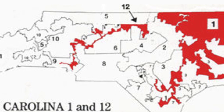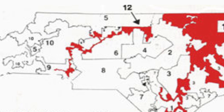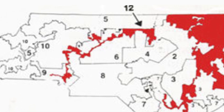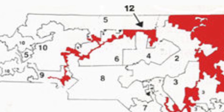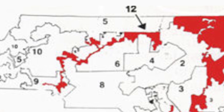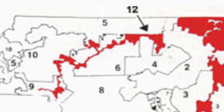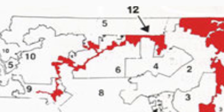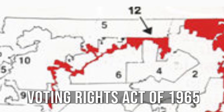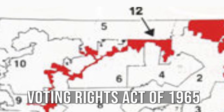In 1990, North Carolina experienced significant demographic changes as the state's Black American population increased. As a result, the state's General Assembly redrew the boundaries of the state's congressional districts to create a new district with a majority of Black Americans' population. The new district, which was designed to look like a snake, became known as the 12th Congressional District and was designed to comply with the Voting Rights Act of 1965, which prohibits the dilution of minority voting strength.